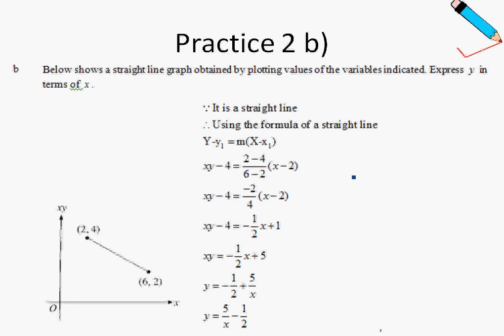So first and foremost, using the two points, we can find our gradient. So let me just do some side working over here to show you the gradient. So gradient will be 2 minus 4 over 6 minus 2, which is just negative half.